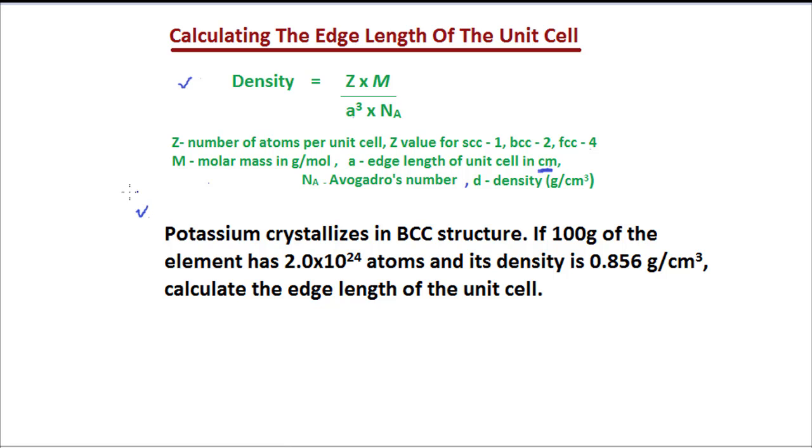This is the problem given. The problem says that potassium crystallizes in BCC structure. From this information we get Z value. Z for BCC structure is 2, means there are 2 atoms per unit cell.